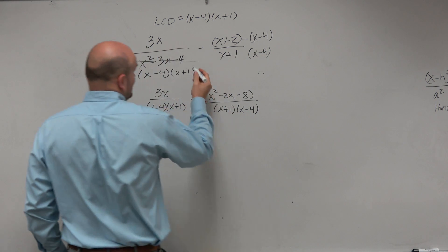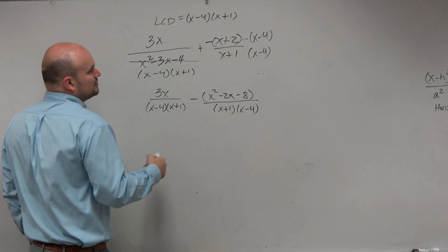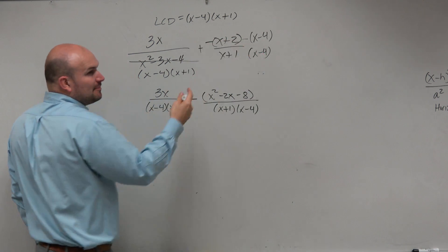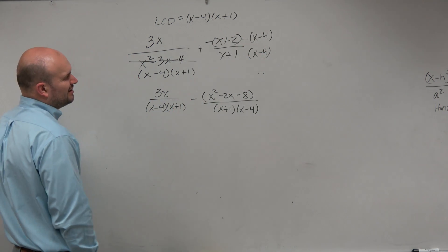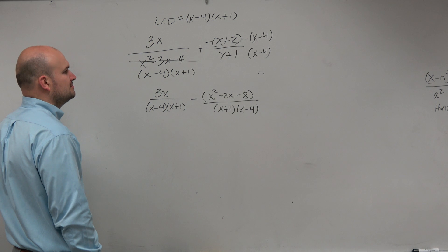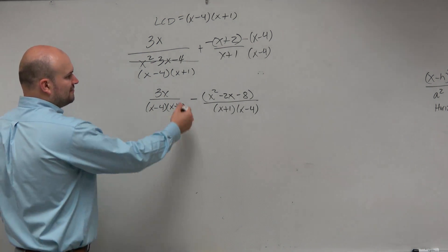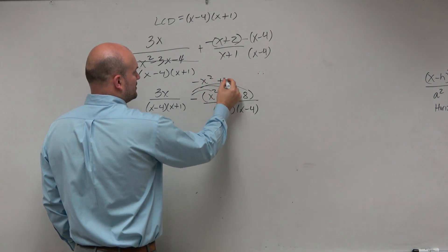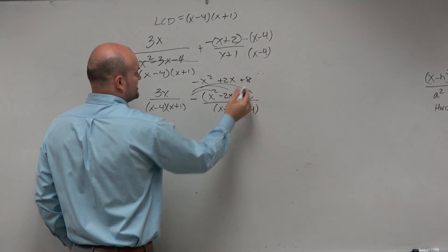So sometimes it might be easier just to make it a positive and then negate that whole top first. But I don't really like multiplying with negative numbers, so I like to do that secondary. So therefore, if I distribute this, let's see what that'd give me. That'd give me negative x squared plus 2x plus 8.